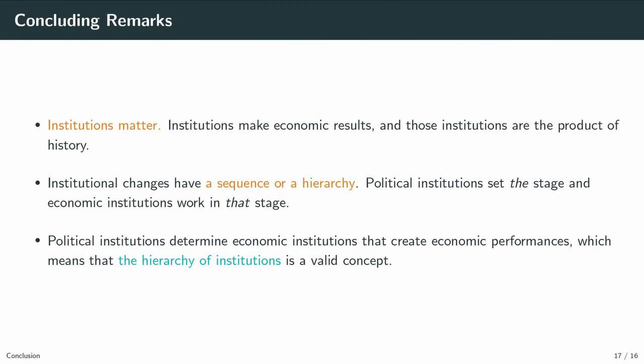To conclude, institutions matter. Institutions make economic results, and those institutions are the product of history. The underlying factor that makes the difference is institutions. Institutional changes have a sequence or a hierarchy. Political institutions set the stage, and economic institutions work in that stage. Political institutions determine economic institutions that create economic performances, which means the hierarchy of institution hypothesis is a valid concept. Thank you.